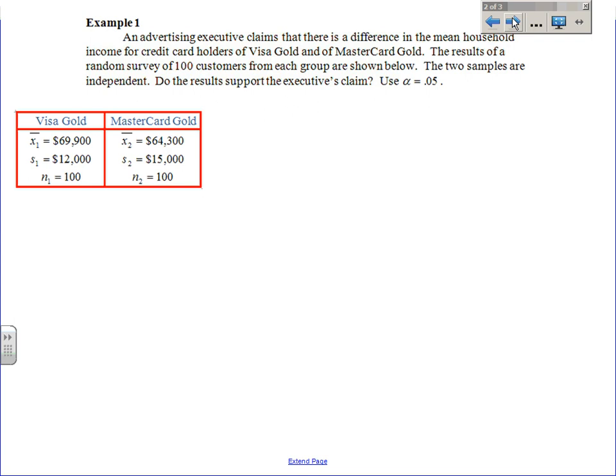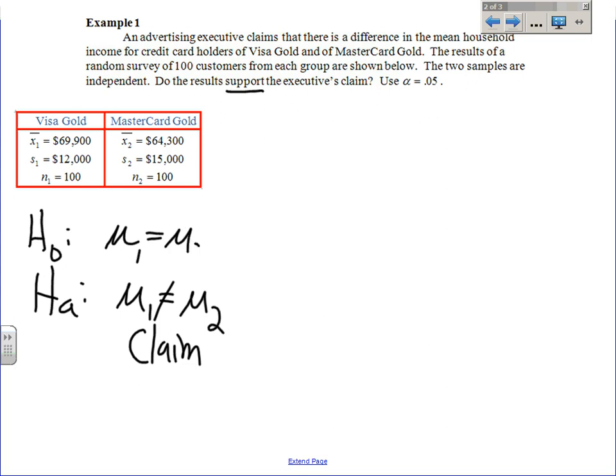The hardest part when you first start these is getting the null and alternate. I truly believe to get started is really the hardest. Once you kind of get rolling, it's not that bad. They claim that there is a difference, so in other words the two means are not equal, right? So we're going to say down here that μ₁ and μ₂ are not the same. That, very good, is your claim. And let's face it, we're very smart, we should have known that's where the claim was because of how many of these we've done.